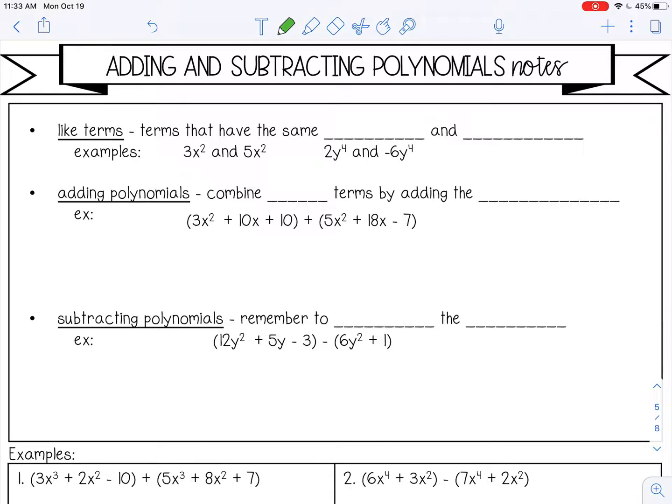Like terms are terms that have the same variable and the same exponent. So 3x squared and 5x squared, those are like terms. They both have an x and they both have squared. And then 2y to the 4th power, negative 6y to the 4th power, they both have y to the 4th power, so they are like terms.